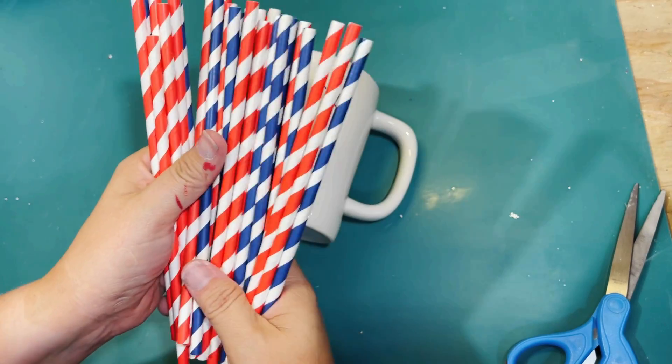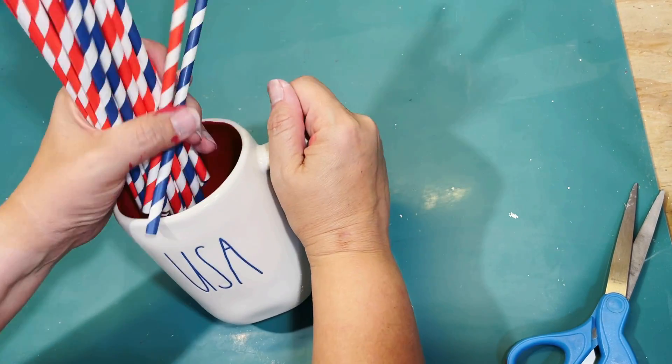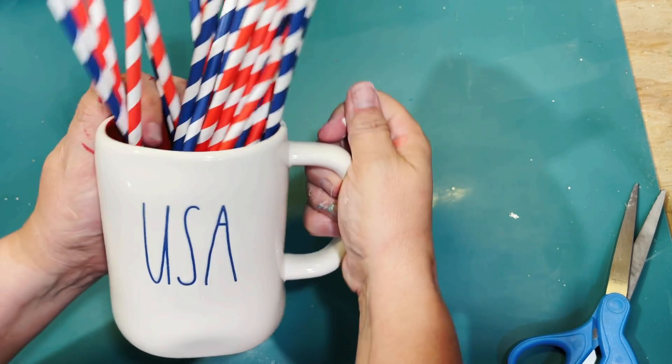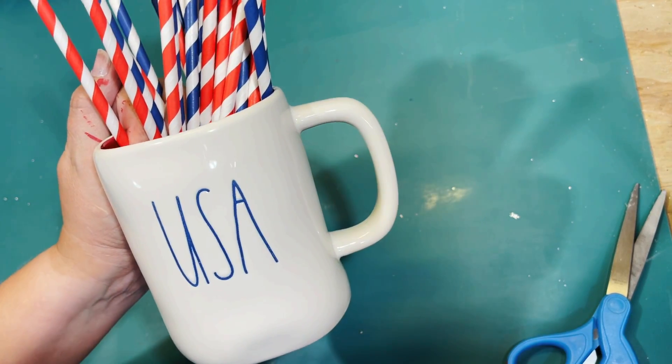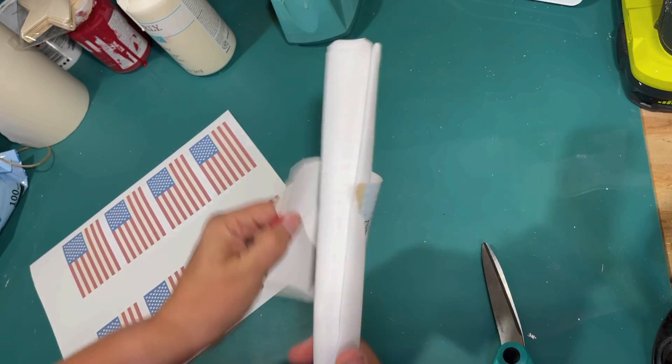Okay. So I told you I had a Ray Dunn mug collection. So this is my USA one that I've had for several years. And I'm just going to put some of these fun red, white, and blue straws in it. The paper straws from the Dollar Tree and sit that on my coffee bar as well.